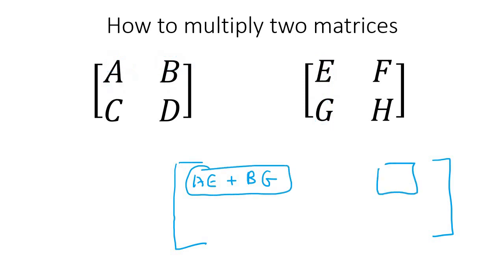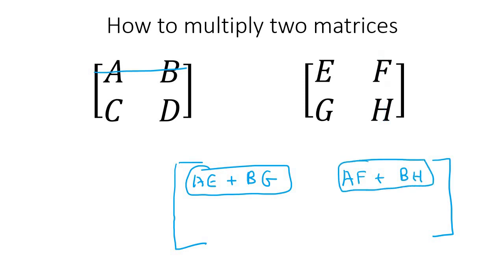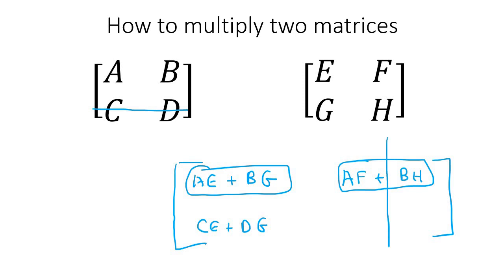Now the next entry — that's row 1, column 2 — so A times F plus B times H. Then the next: row 2, column 1, which gives C times E plus D times G. Finally, the last entry at row 2, column 2 is C times F plus D times H. And there we go — that's how you multiply two 2 by 2 matrices algebraically.